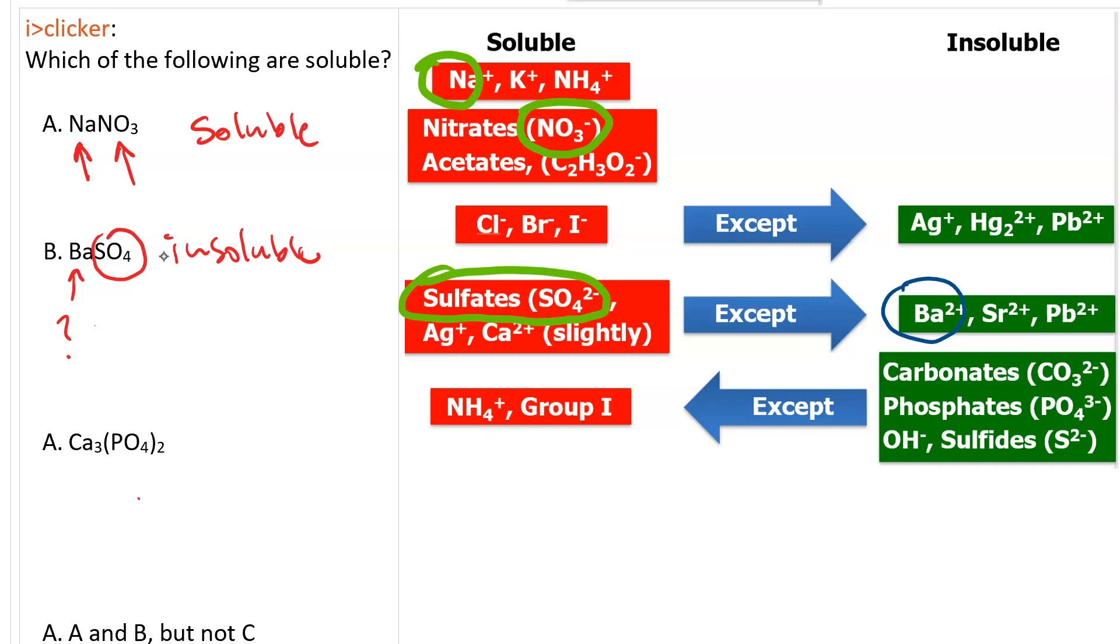For calcium phosphate, there's no rule for calcium. But, there is a rule for phosphate. And, that is that it's usually insoluble. It's over here in the bottom right corner of our solubility chart. The only time phosphate is soluble is when the cation is one of these. Calcium is group 2. It is not group 1. And, it is not NH4+. Hence, the rule wins. And, calcium phosphate is insoluble. So, our only soluble one is sodium nitrate.